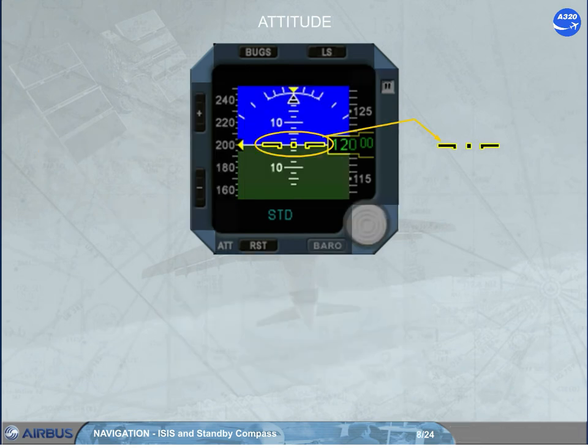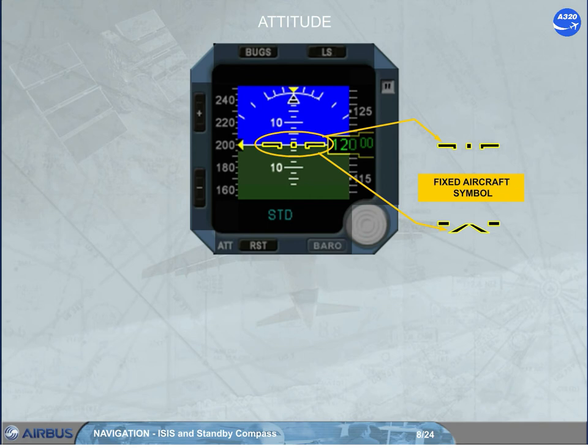A black symbol outlined in yellow shows the aircraft. Note that depending on the version, the fixed aircraft symbol can also be a V-bar aircraft symbol.